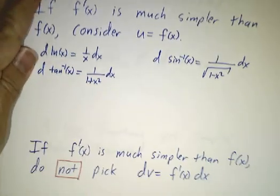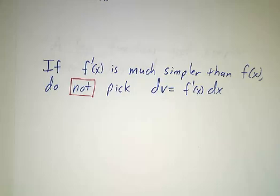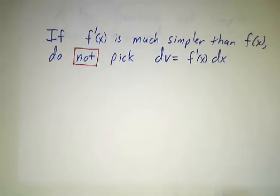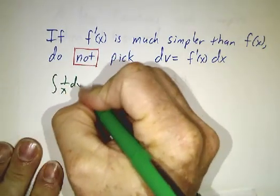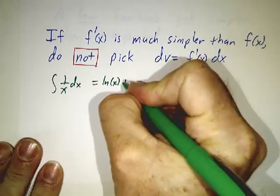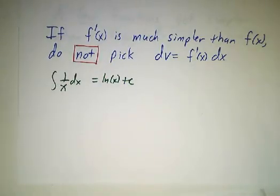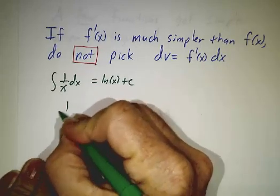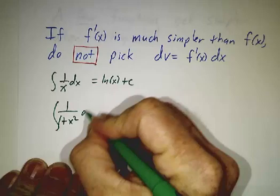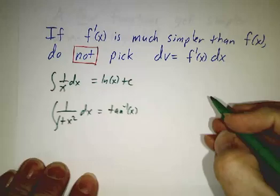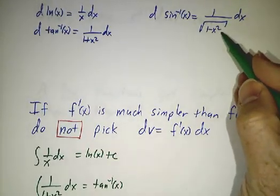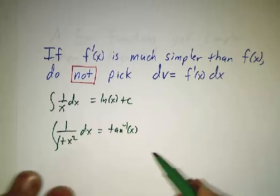On the flip side, if you run into something that really doesn't want to be integrated, don't make that dv. You almost never want to put 1 over x into dv because then you'd get a log x in v. You never want to put 1 over 1 plus x squared in dv because then you'd get an arctangent. You never want to put 1 over root 1 minus x squared in dv because then you'd get an arcsine.